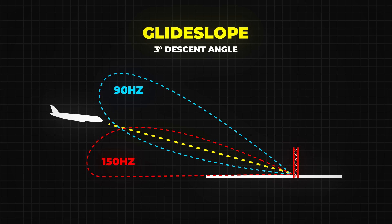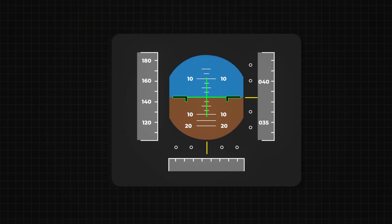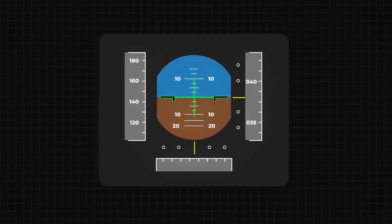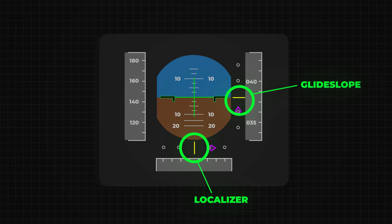In the cockpit, pilots see this information through special instruments, usually a horizontal and vertical diamond or bar. If the diamond is off-center, the pilot knows to adjust the flight path, either left or right for the localizer or up or down for the glide slope.